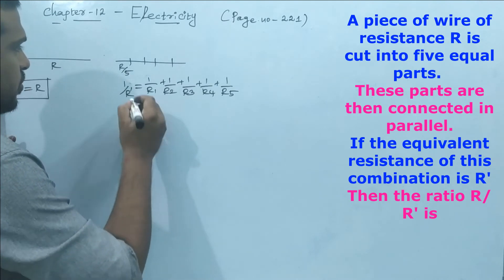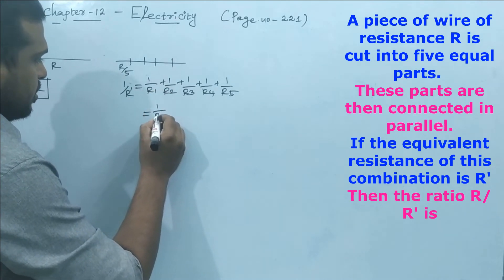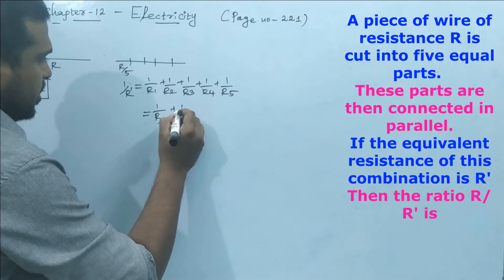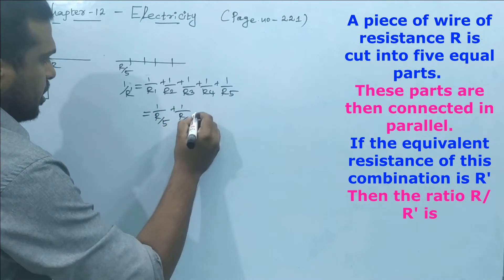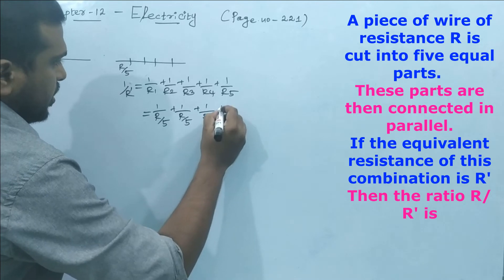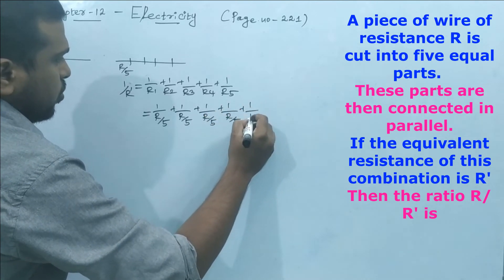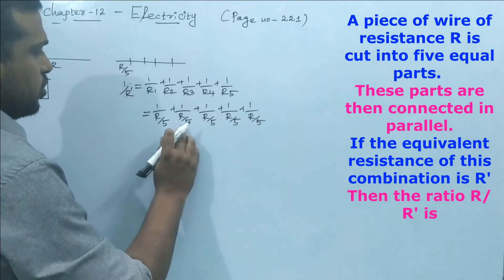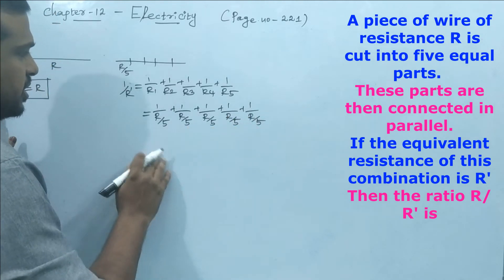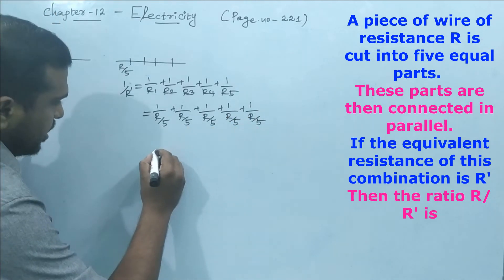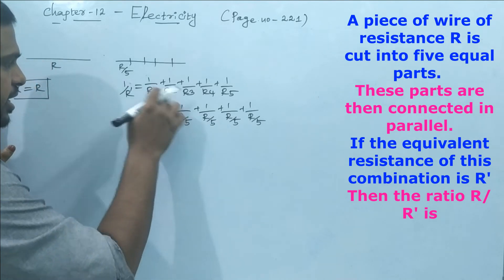So what is 1/R'? It equals 1/(R/5) + 1/(R/5) + 1/(R/5) + 1/(R/5) + 1/(R/5) for all five parts. Now we can take this to the numerator.